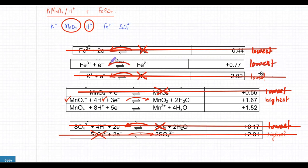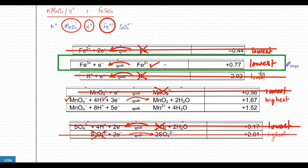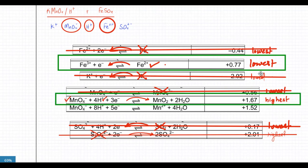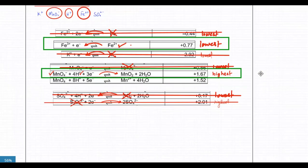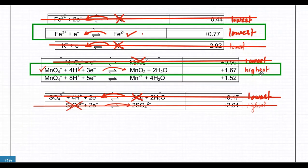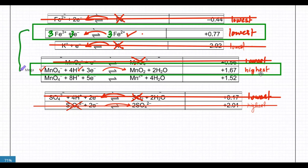We do have Fe²⁺, which is one of our reactants, so that's our lowest potential - Fe²⁺ loses electrons. The highest potential, MnO₄⁻ + H⁺, gains electrons. Now we make an equation from this. We need to make the number of electrons gained and lost equal. The top equation involves three electrons, so we multiply the Fe²⁺ equation by three to balance it, then add the two equations together.